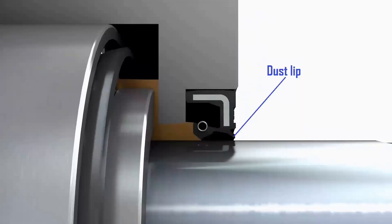Then there is a dust lip which functions to prevent external contaminants such as dust or water from entering the engine through the gap between the oil seal and the shaft or filling the empty space between the seal and the shaft.